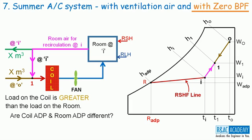As the load on the coil and the load on the room are different, are the coil ADP and room ADP different in this case? The answer is no. We have the bypass factor equal to zero, hence the coil ADP and the room ADP are equal in this case. The line joining 1 and C is called the GSHF line. GSHF is the grand sensible heat factor and it is equal to TSH divided by GTH. While the RSHF line intersects the saturation curve at room ADP, the GSHF line always intersects the saturation curve at coil ADP.